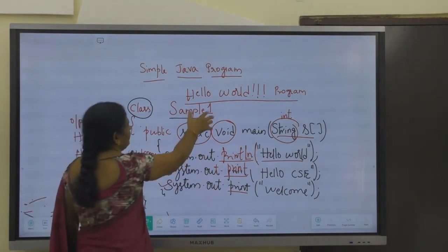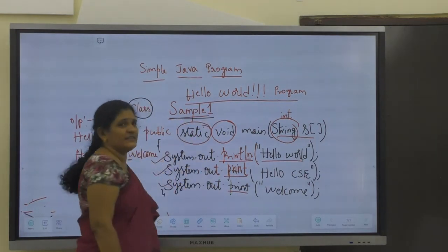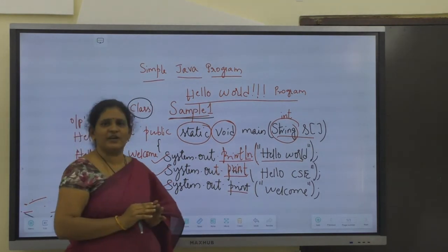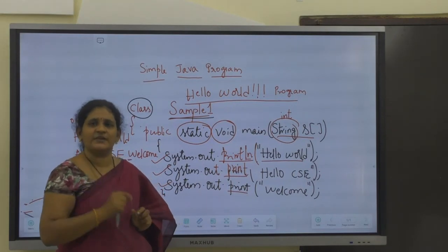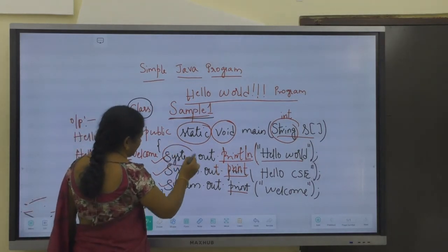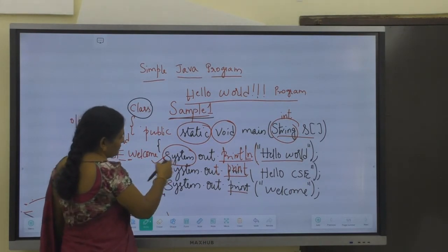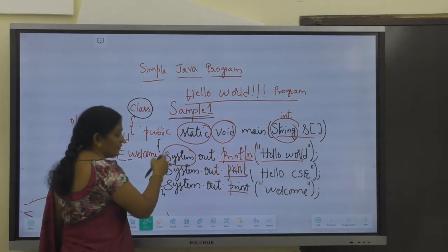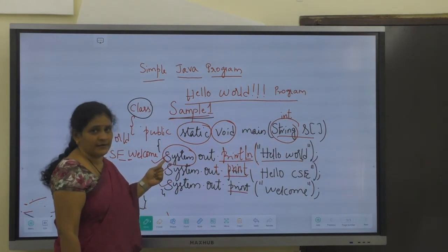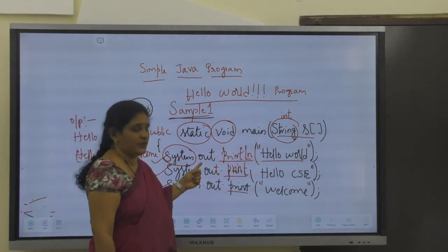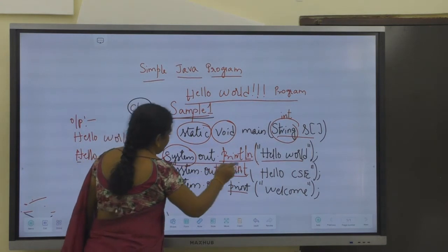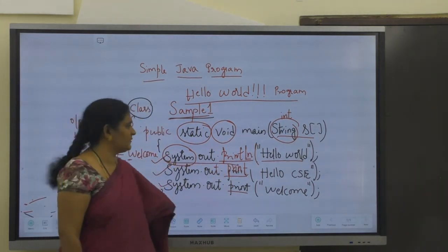The class name is an identifier — whatever name you like, you can use, but no spaces and no special symbols. Each word's starting letter should be a capital letter. In System.out.println, System is a class — 'S' must be a capital letter since it is a predefined class defined by Java itself. Out is a reference variable, and println is a method. Methods start with a small letter, so everything except the S in System is in small letters.